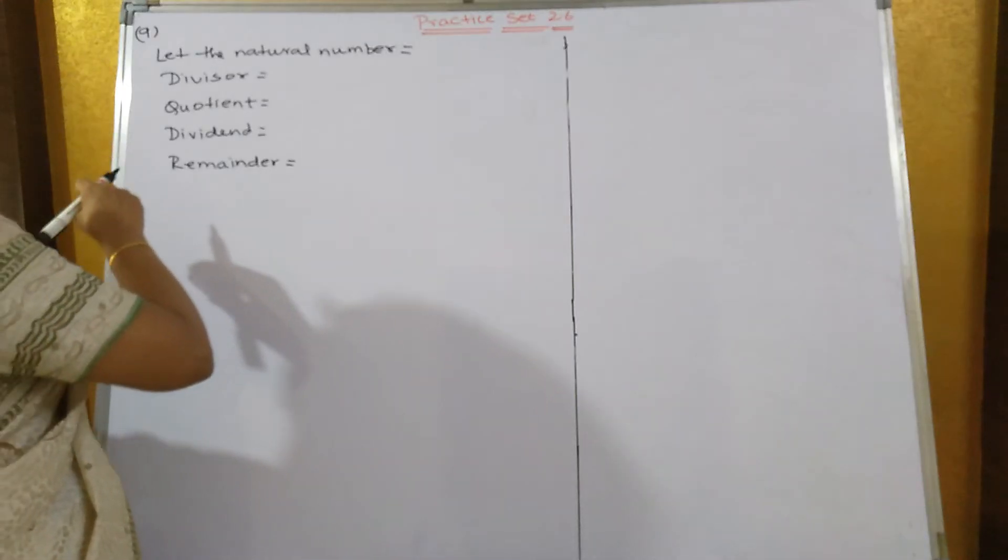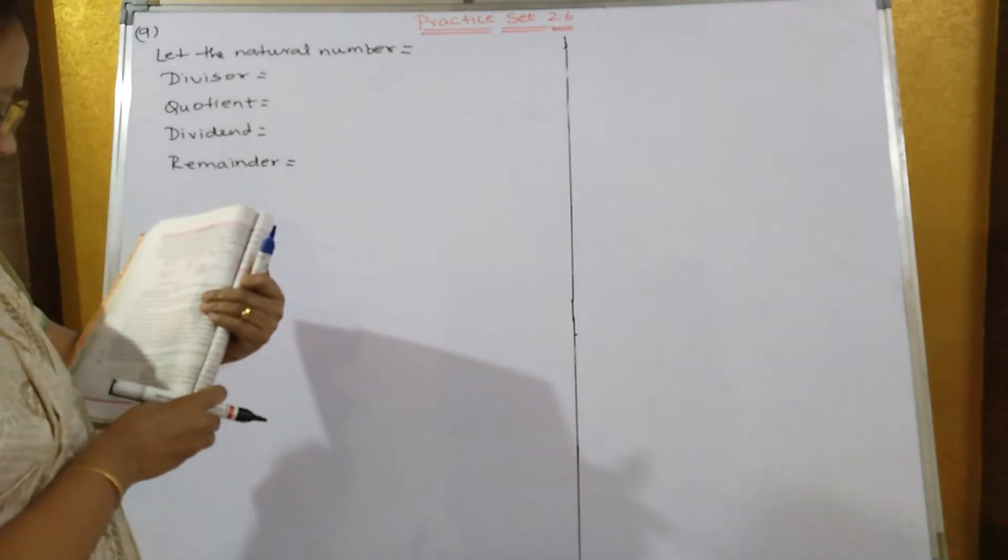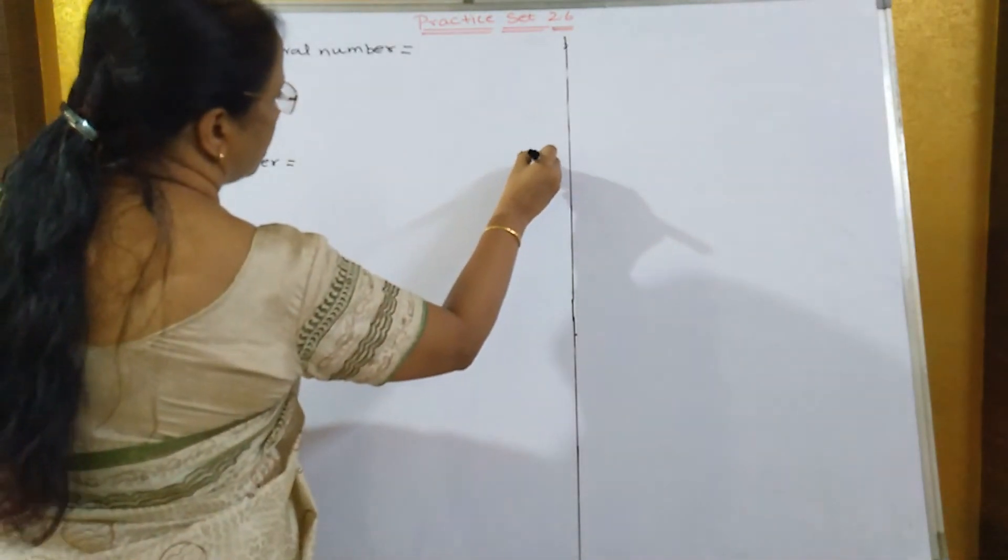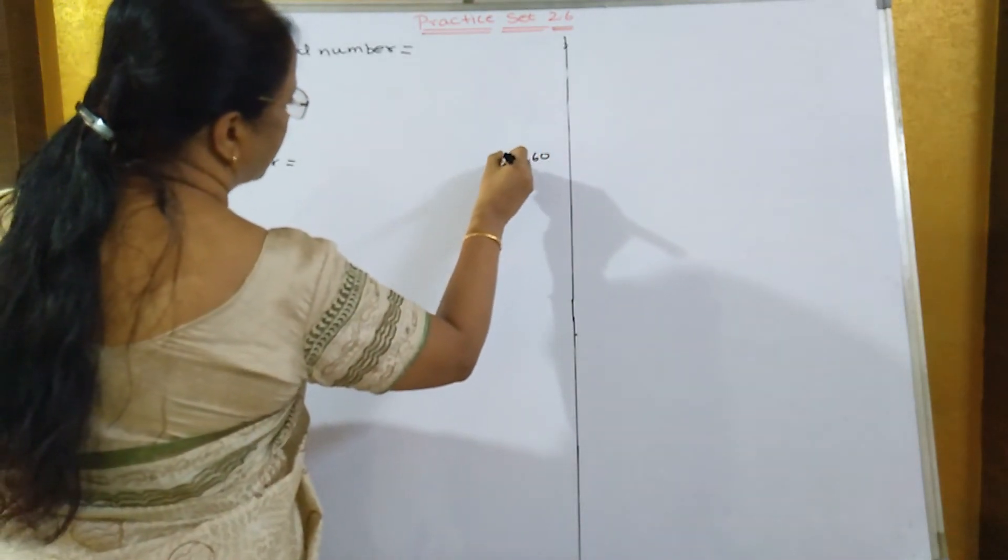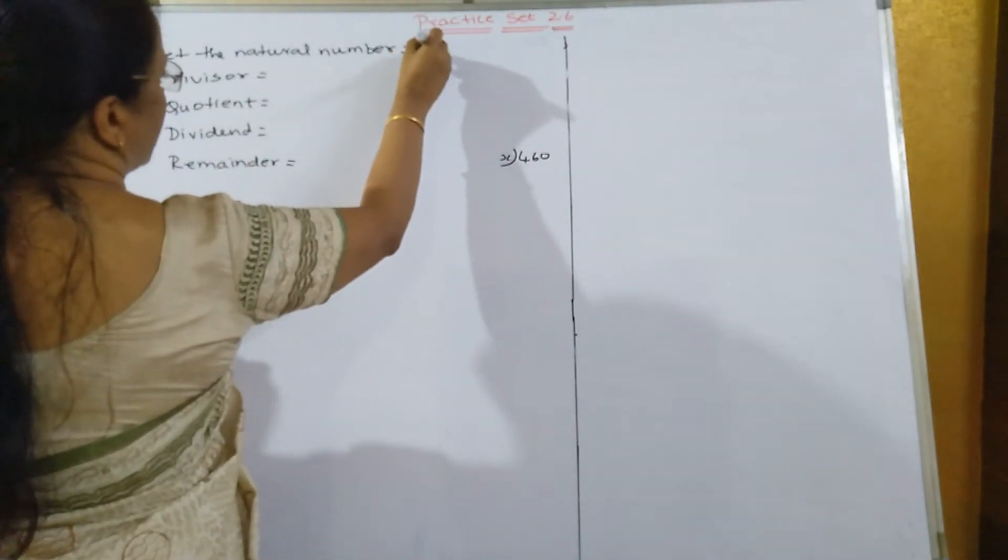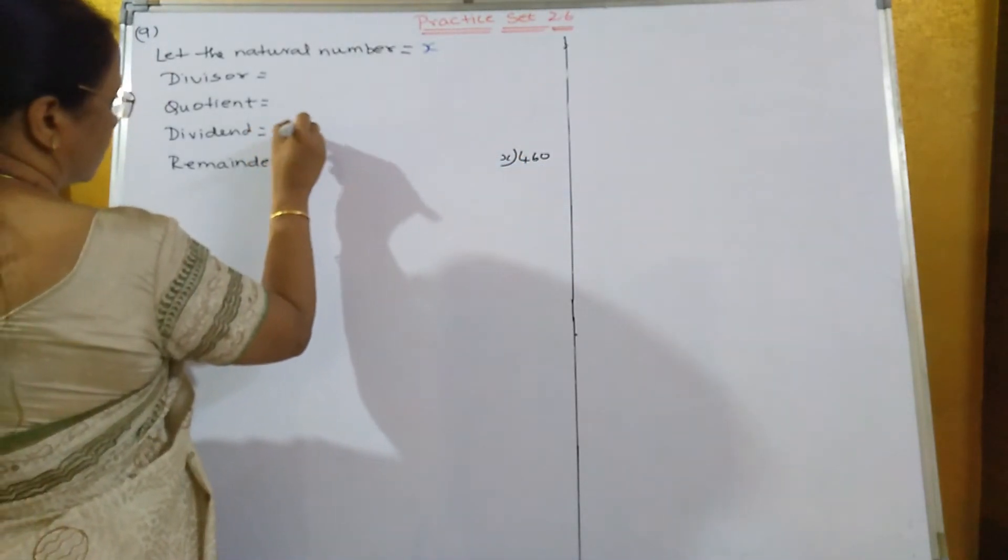Now sum number 9, they have given that if 460 is divided by a natural number. Let us take the natural number as x. Let the natural number be x and this is known as dividend. Dividend is equal to 460.